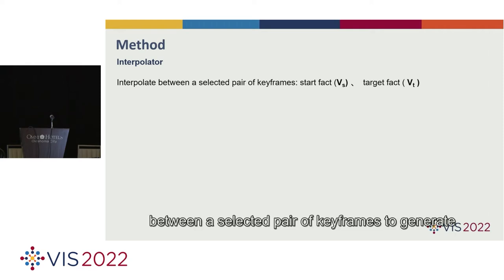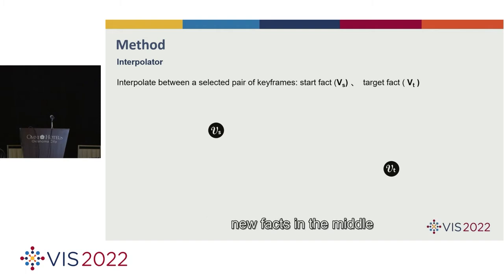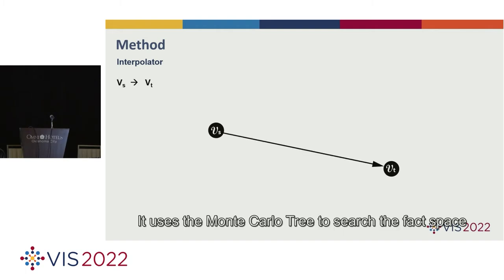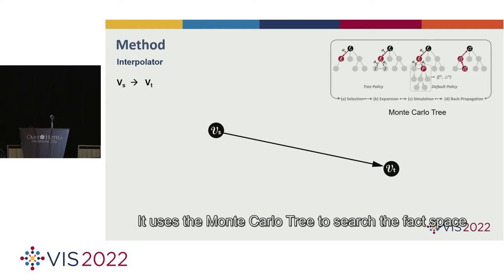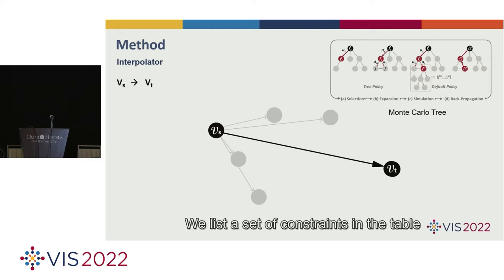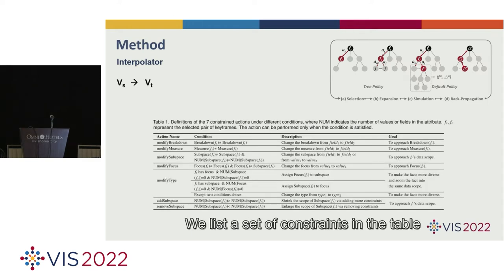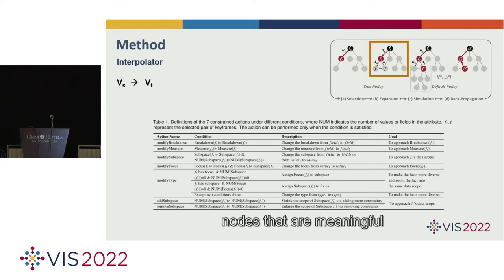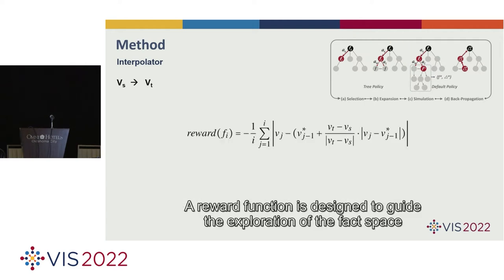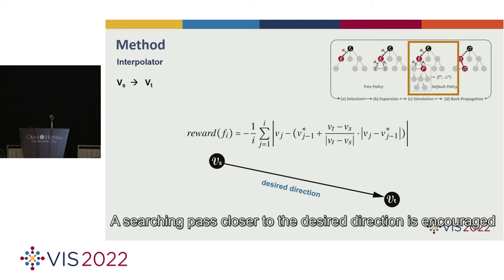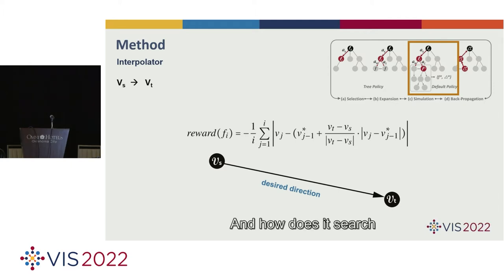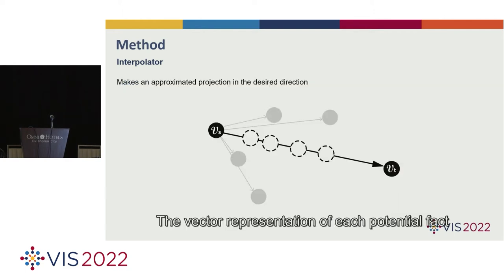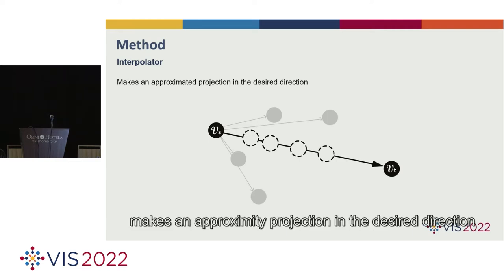The interpolator is designed to interpolate between a selected pair of keyframes to generate new facts in the middle. It uses the Monte Carlo tree to search the fact space and expand the corresponding nodes. We list a set of constraints in the table to guarantee the generated nodes that are meaningful and closely related to their predecessor. A reward function is designed to guide the exploration of the fact space. A searching path closer to the desired direction is encouraged.